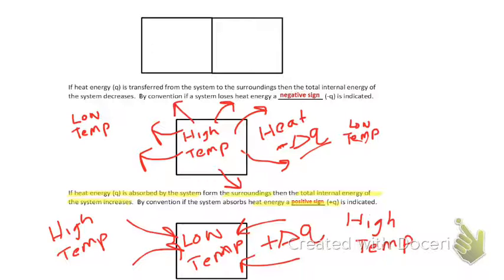Number one is that heat energy is transferred energy that is always transferred from a hot object to a cold object. So from a higher temperature to a lower temperature.